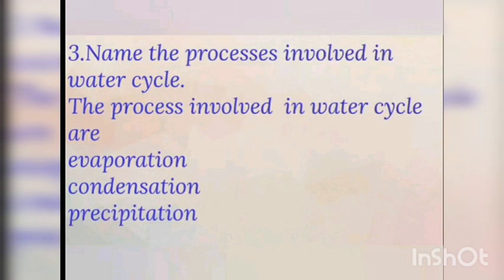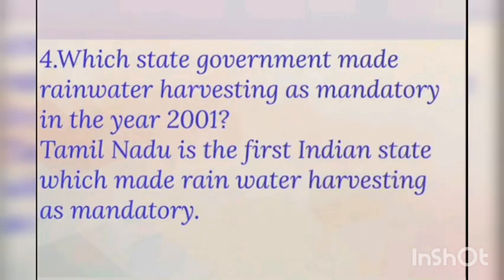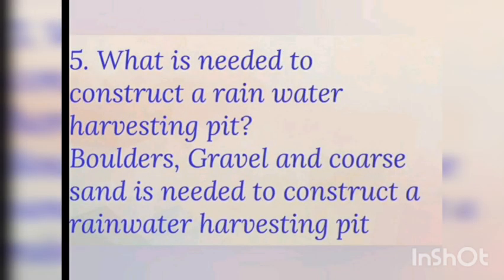Third one: name the processes involved in the water cycle. The processes involved in the water cycle are evaporation, condensation, and precipitation. Fourth one: which state government made rainwater harvesting mandatory? In the year 2001, Tamil Nadu is the first Indian state which made rainwater harvesting mandatory. Fifth one: what is needed to construct a rainwater harvesting pit? Boulders, gravel, and coarse sand are needed to construct a rainwater harvesting pit.